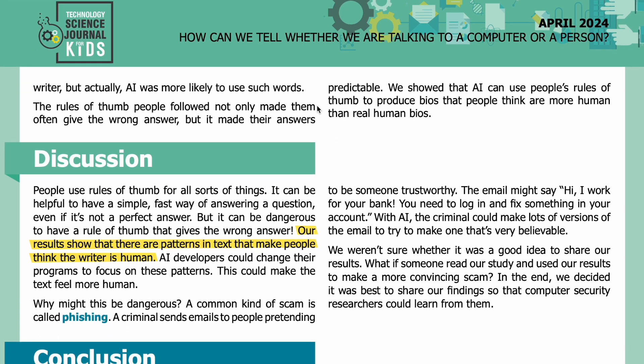The rules of thumb people followed not only made them often give the wrong answer, but it made their answers predictable. We showed that AI can use people's rules of thumb to produce bios that people think are more human than real human bios.